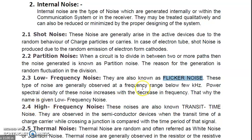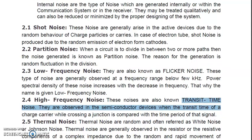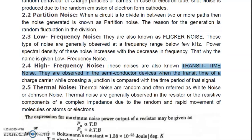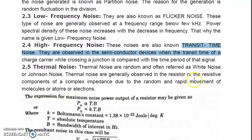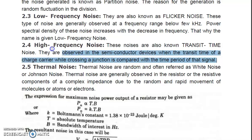High frequency noise is also known as transit time noise, and it is observed in semiconductor devices. It occurs when the transit time of a charge carrier while crossing a junction is comparable to the time period of that signal. So transit time noise occurs in semiconducting devices when the carrier crossing time is compared with the signal time period.